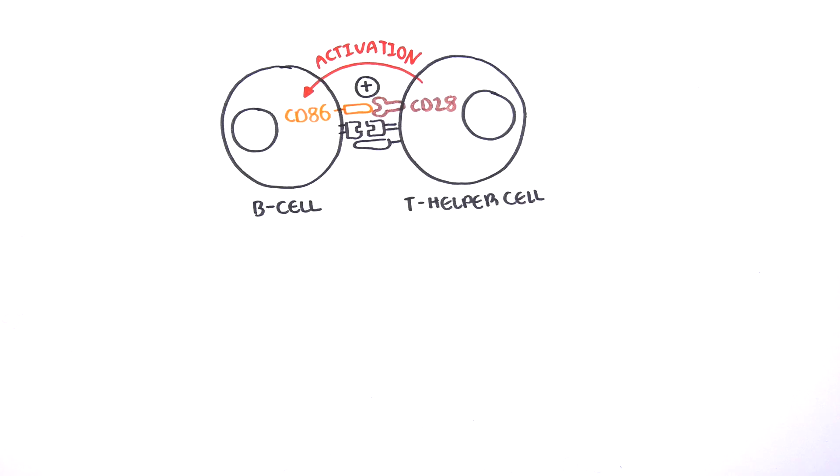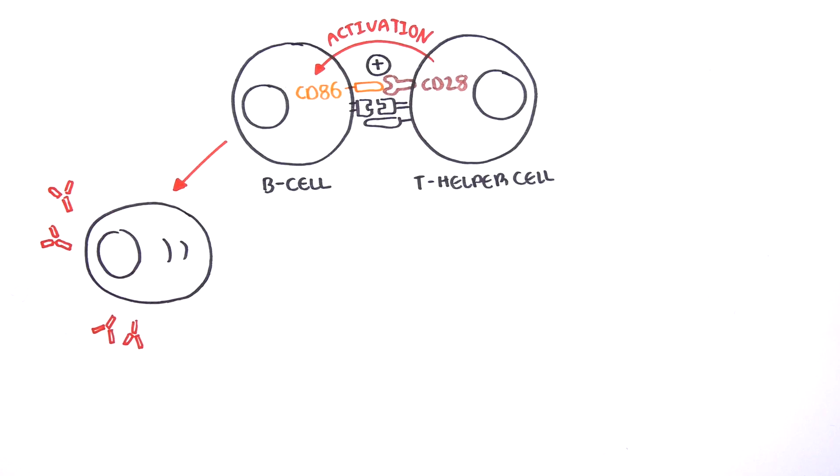If an abnormal B cell is activated, it can produce antibodies that target the body's own cells.